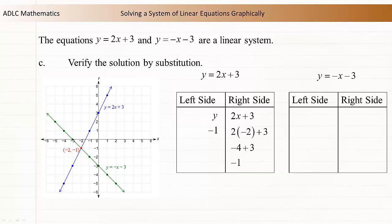Now let's check y equals negative x minus 3. Enter the left side of the equation into the table. Substitute negative 1 for y. Next, enter the right side of the equation into the table. Substitute negative 2 for x and simplify. Negative negative 2 is equal to 2, and 2 minus 3 is negative 1. The left side is equal to the right side, so negative 2, negative 1 also satisfies this equation. Negative 2, negative 1 satisfies both equations, so it is a solution to the system.